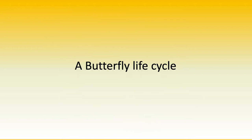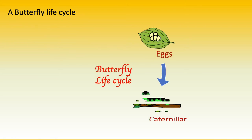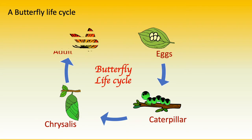Each type of animal has their own unique life cycle. In a butterfly life cycle, a butterfly lays eggs that hatch into baby caterpillars. As the caterpillar eats, it grows bigger, then moves to its next stage, transforming into a chrysalis. Eventually it is ready to transform into a butterfly and lays eggs to continue the life cycle.